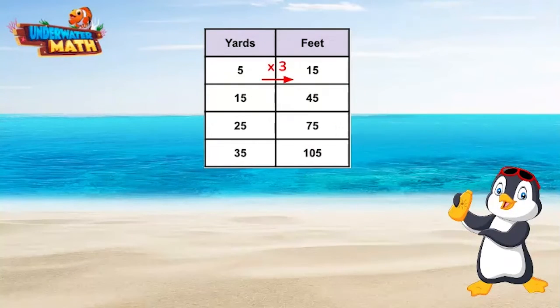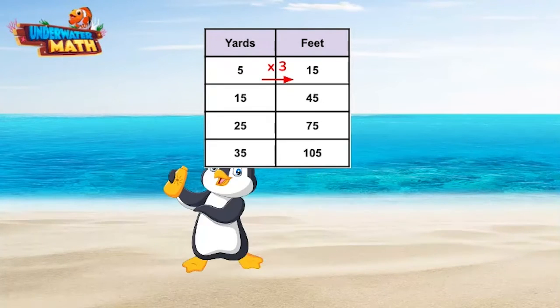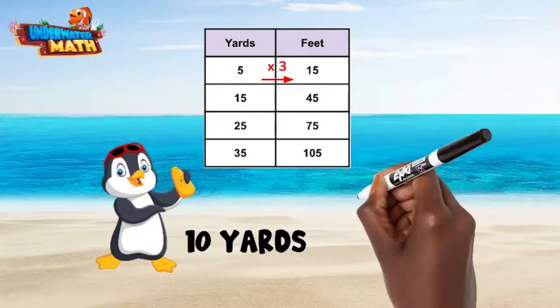There must be 3 feet in a yard. If I waddle 10 yards, how many feet did I go? If there are 3 feet in a yard, we multiply our yards by 3. 10 times 3 is 30 feet.